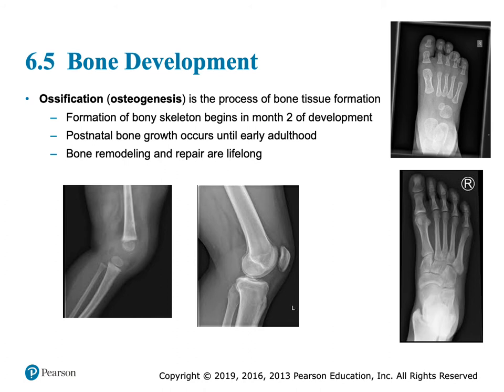Once that baby comes out, it's got bones, but it's also got a lot of soft spots — a lot of cartilage. That bone growth needs to continue after the baby is born, postnatal bone growth, until early adulthood. Women stop growing younger than men. Men will do some sprouting even late into high school and maybe even after. Bones are alive — they're constantly being remodeled and repaired all your life. You'll replace your skeleton approximately every 10 years.